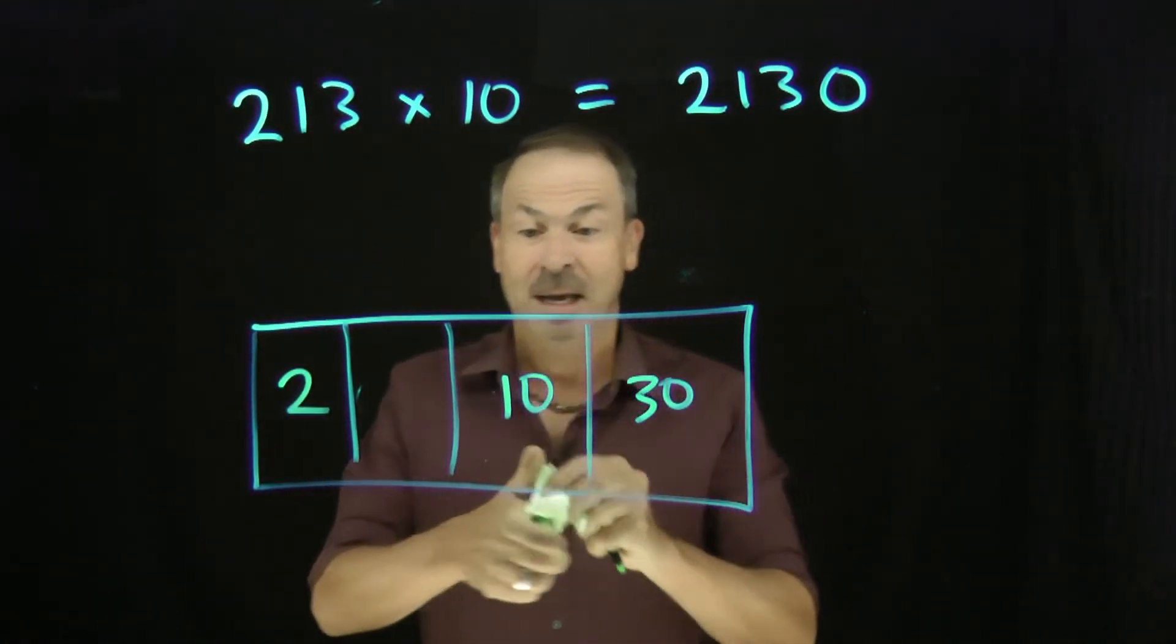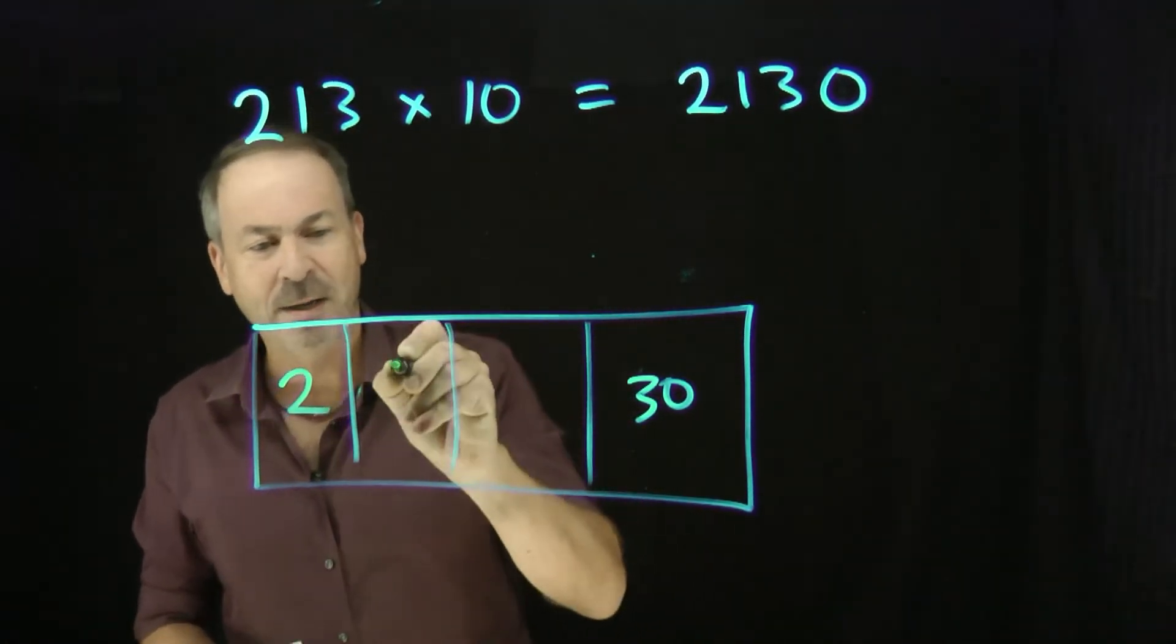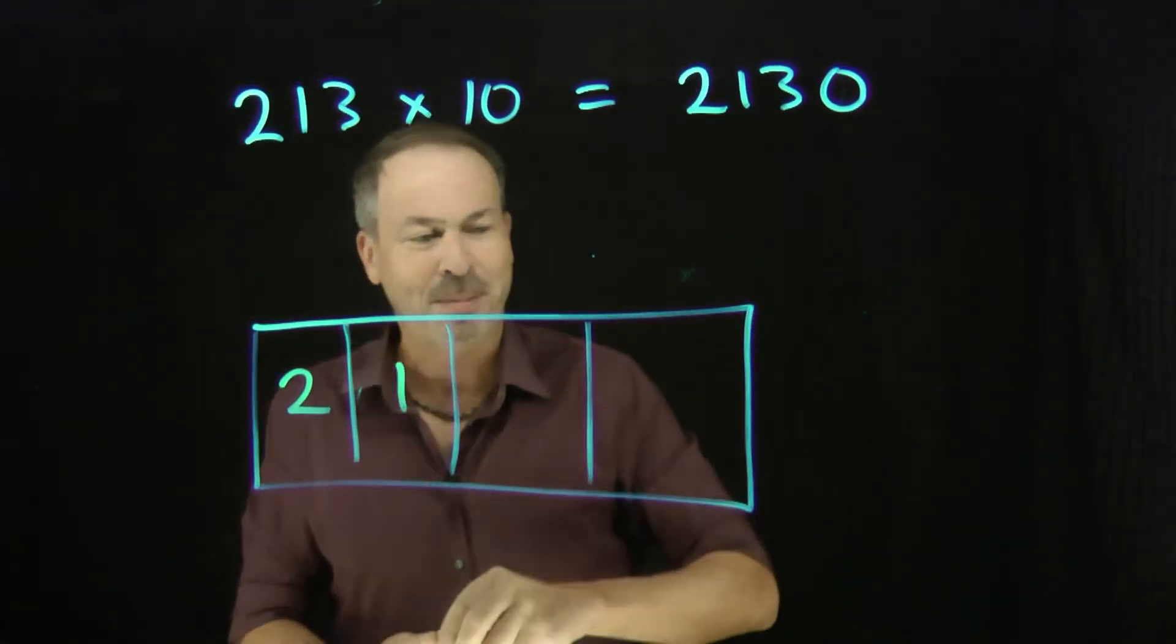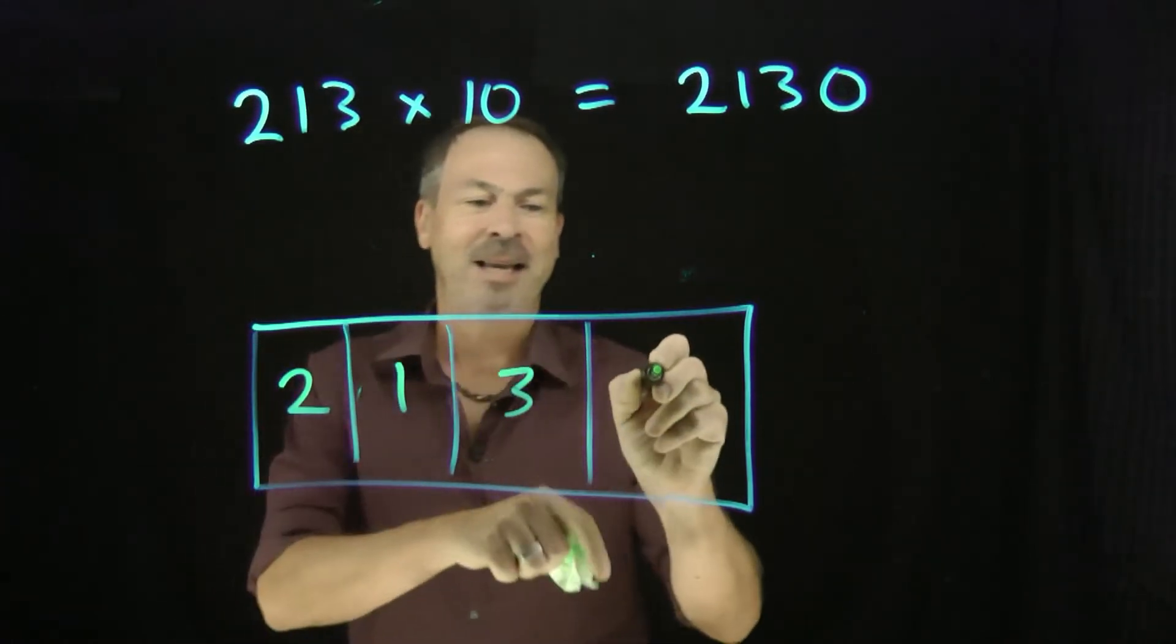There'll be one explosion here. Ten explode, kaboom, make one dot here, leaving none behind. And 30. Three groups of ten, three explosions, kaboom, kabam, kabozing, make three dots there, leaving none behind.